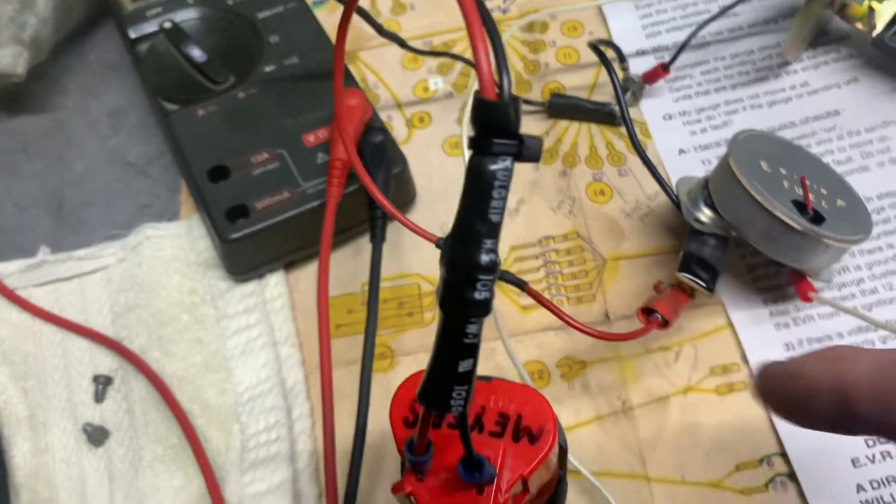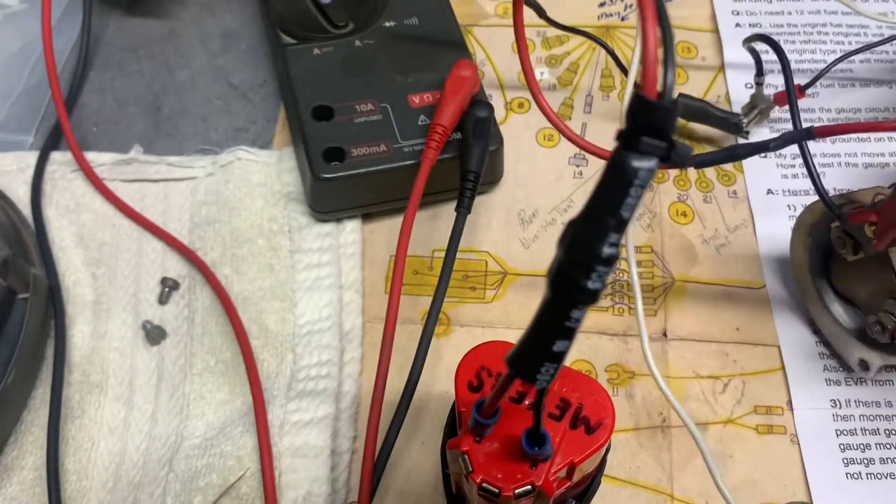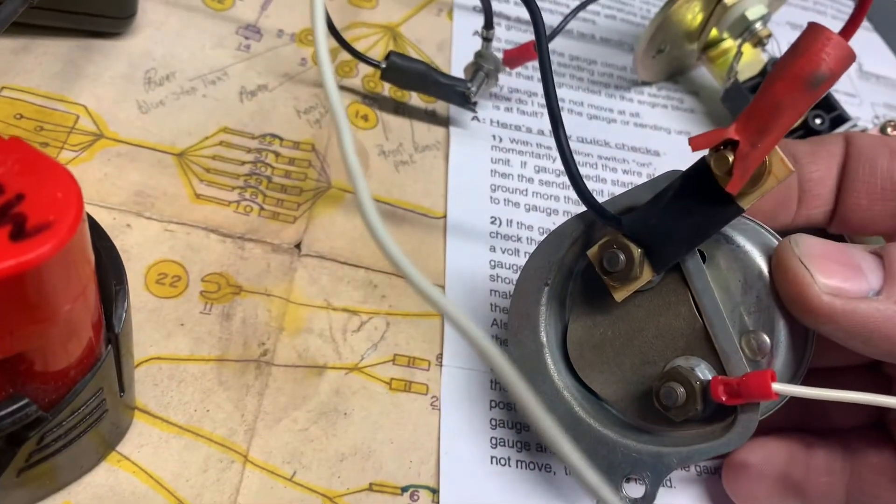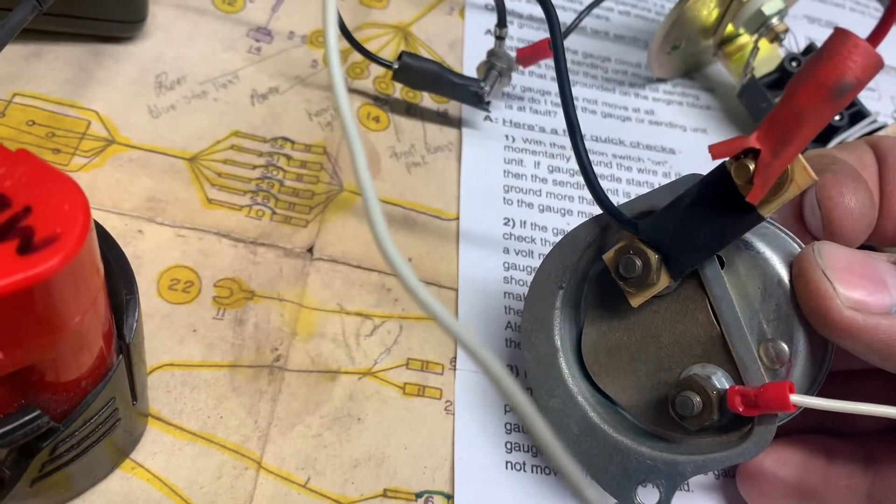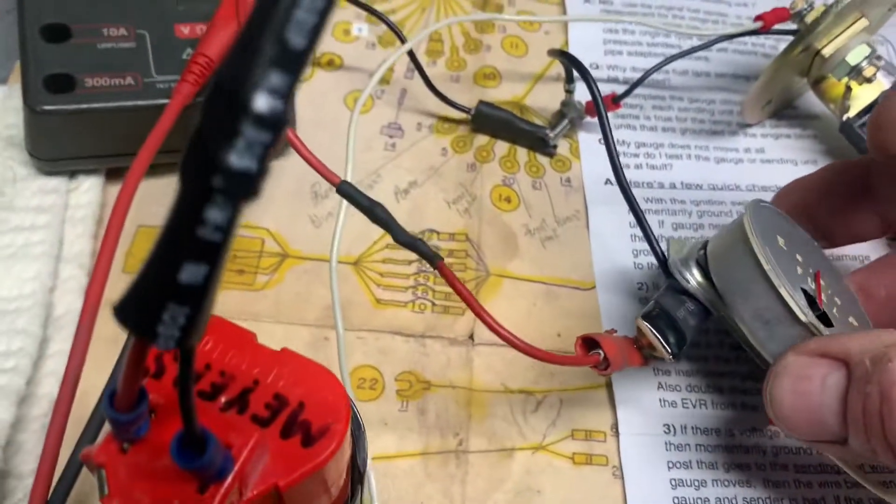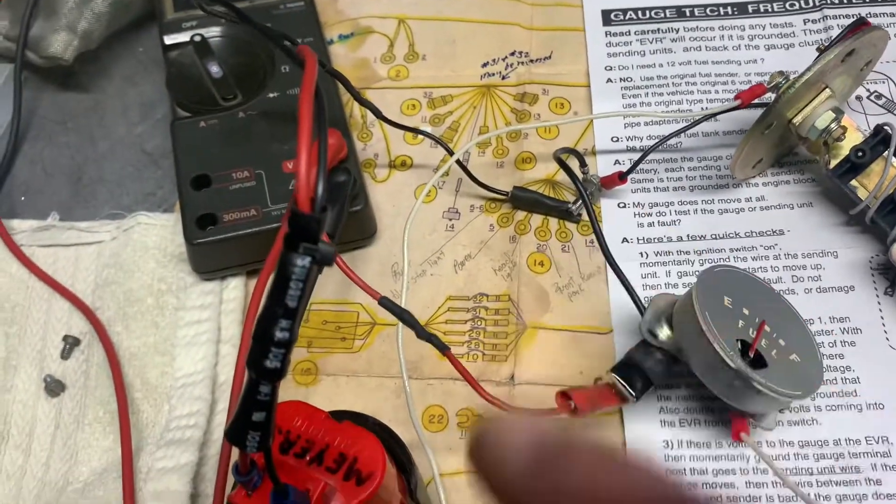Since it's the original six volt gauge, I've got an electronic voltage reducer here. You can kind of see it just clips, it screws on the original post of the gauge, then there's another post that your positive, your battery lead connects to.